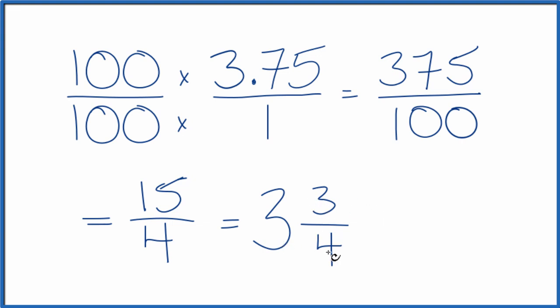You can check that. 3 times 4 is 12. 12 plus 3 is 15. So 15 fourths, just like we had here. And these are all equal. 3.75 is equal to 375 over 100, and 15 over 4, and 3 and 3 fourths.